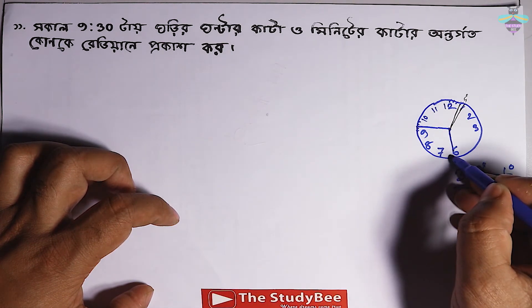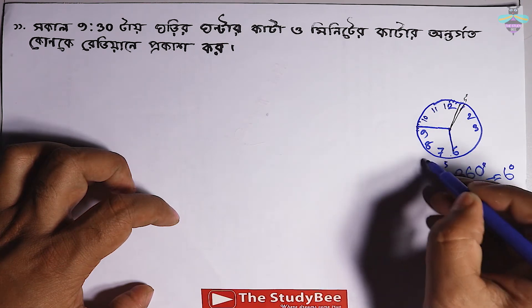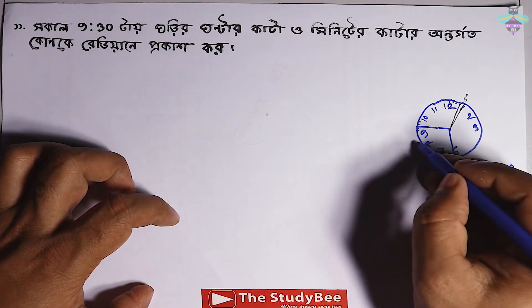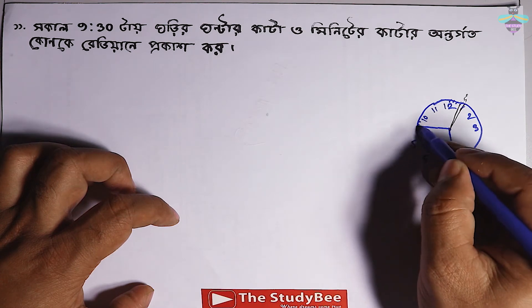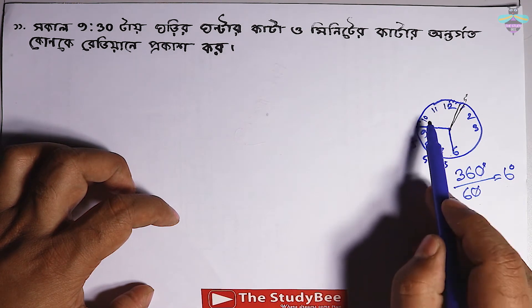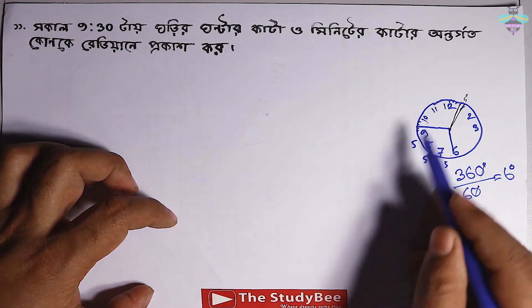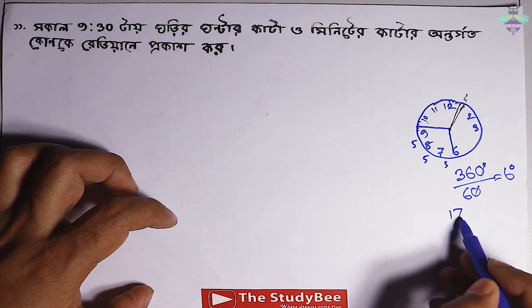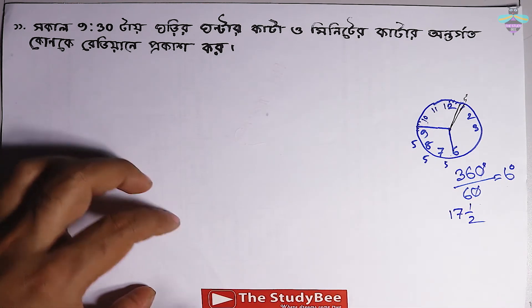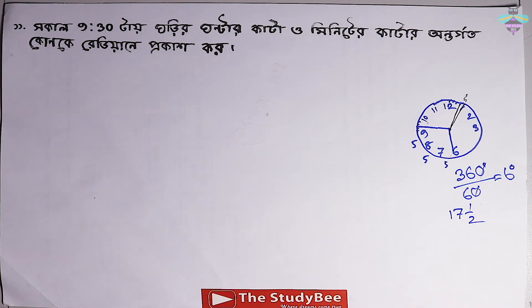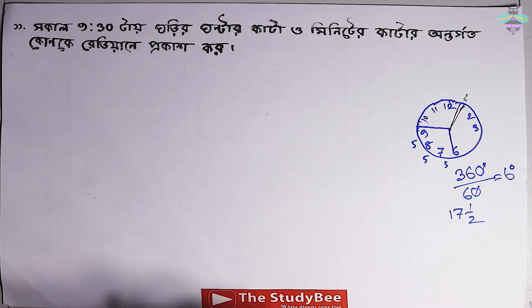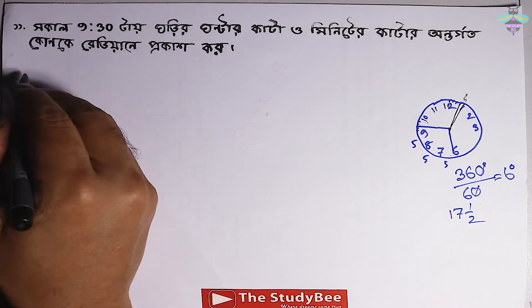কতো গুলো মিনিটের কাঁটার ডিপেন্ড থেকে শার নটা পর্যন্ত আরাই গার তার মানে পোনো আর আরাই তার মানে উছে শতর পোনো নো একে নিশে মানে শার শতরো ঘর সো।